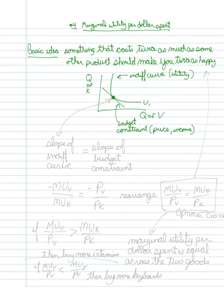My optimal choice is right here. Remember that at that point the slope of the indifference curve is equal to the slope of the budget constraint.